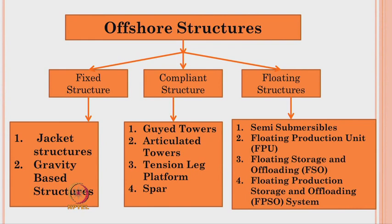Just to have continuity, offshore structures are essentially divided into three categories: fixed structure, compliant structure, and floating structures. Fixed structures have two varieties: jacket structures or template structures, and gravity based structures or GBS platforms. Compliant structures have four varieties: guide towers, articulated towers, tension leg platforms, and spar platforms.